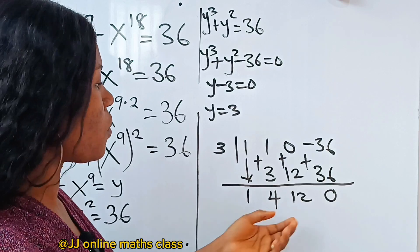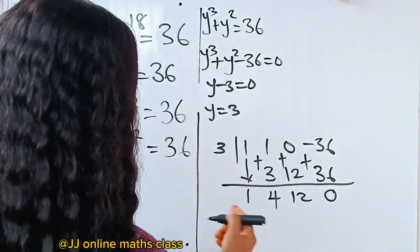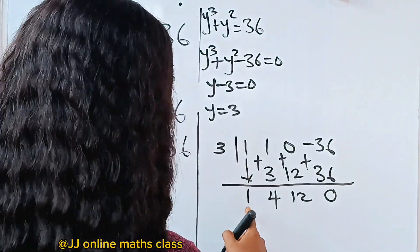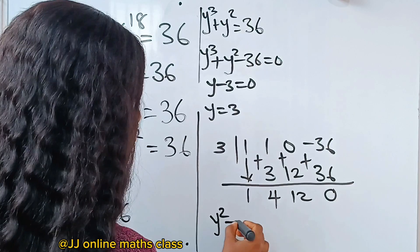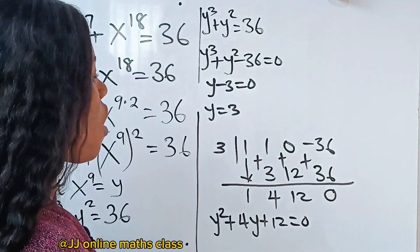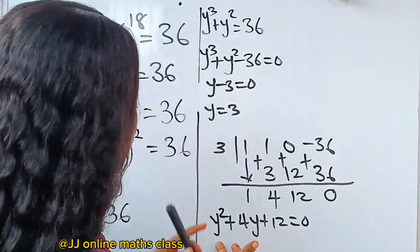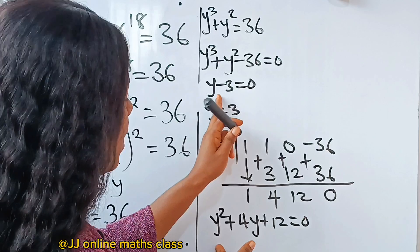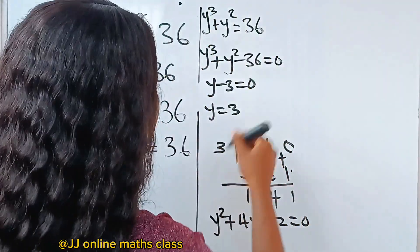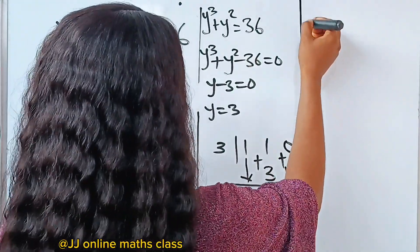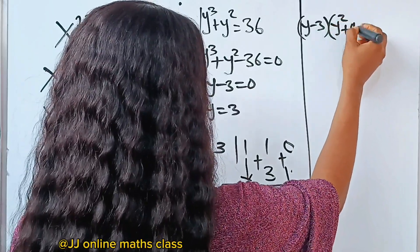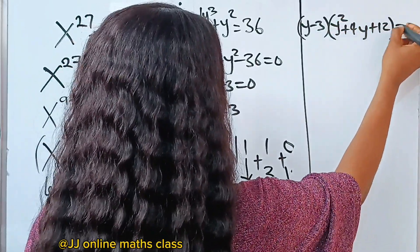How do we get the quadratic equation from here? Since it's quadratic, it starts from power 2. So we have y squared plus 4y plus 12 is equal to 0. So we now have that y minus 3 multiplied by y squared plus 4y plus 12 is equal to 0.